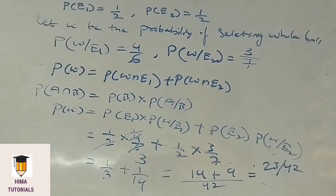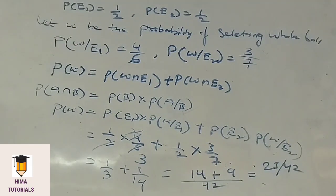That means the probability that the ball drawn is white is 23 by 42. I hope it is clear. Please make a note of it.